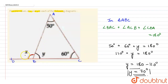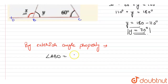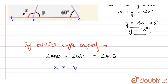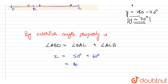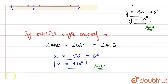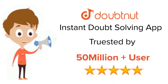So angle X will be equal to the sum of angle BAC and angle ACB. Putting in the values: angle BAC is 50 degrees and angle ACB is 60 degrees, so the value of X will be equal to 50 plus 60, that is 110 degrees. So we have found both values: X equals 110 degrees and Y equals 70 degrees.